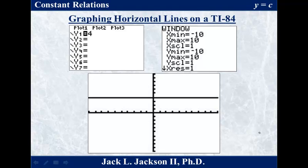If we want to graph a horizontal line on the TI-84, that's pretty easy to do. For example, if we want to graph a horizontal line at a height of 4, we hit our y equals button, where it says y1 equals we put in the number 4 and press enter, and we get ourselves a graph. The y values here are going up by 1's — so this is 1, 2, 3, 4 — there we are: y equals 4, a horizontal line. Easy to do. And of course we could look at the table there if we wanted to as well.